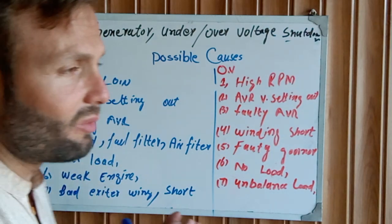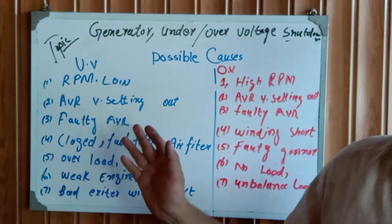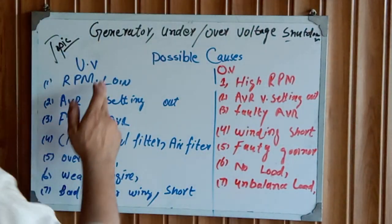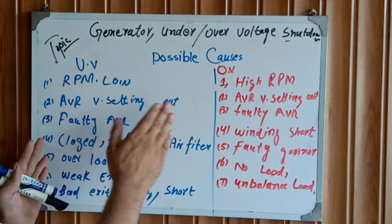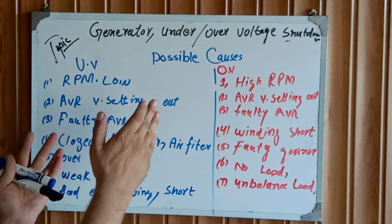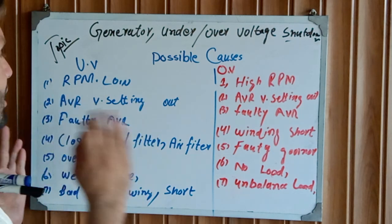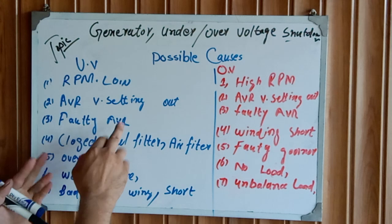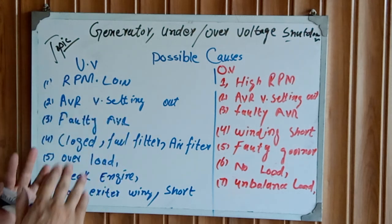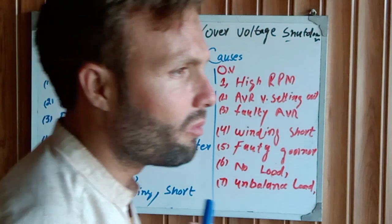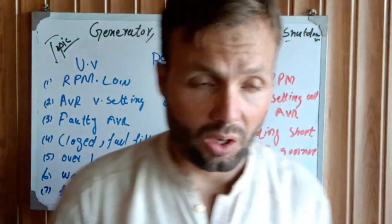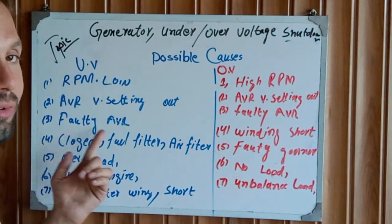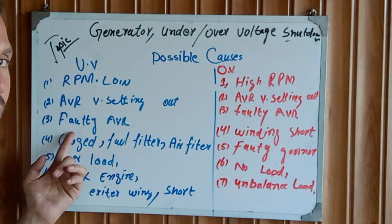Another possible cause is a faulty AVR. If your AVR is faulty or malfunctioning, this will be the main cause of under voltage. Even if your RPM is good at 1800 and your voltage looks correct after setting, if the AVR is malfunctioning it will cause the engine to shut down repeatedly. In that case, swap out the AVR — replace it with another one and check again.